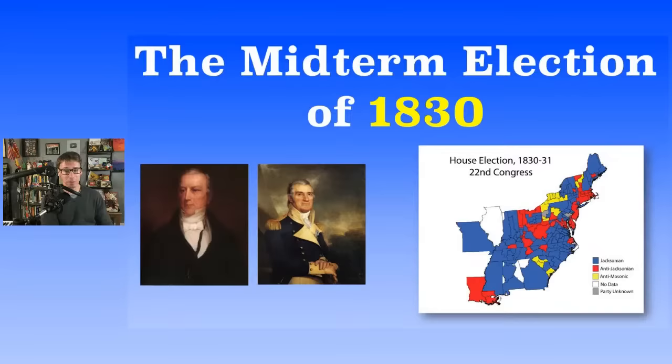The Jacksonians slash Democrats lost some seats mostly to the anti-Masonic party. I definitely need to make a video about the anti-Masonic party someday — they were very influential in the 1830s. But still, Democrats had control and Andrew Jackson would get re-elected in 1832.